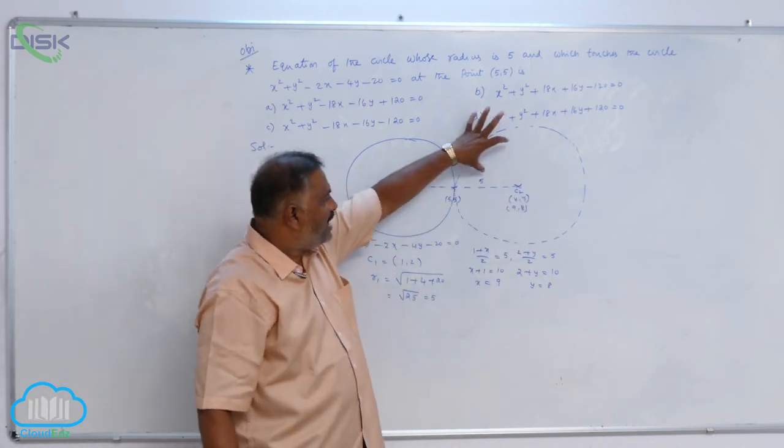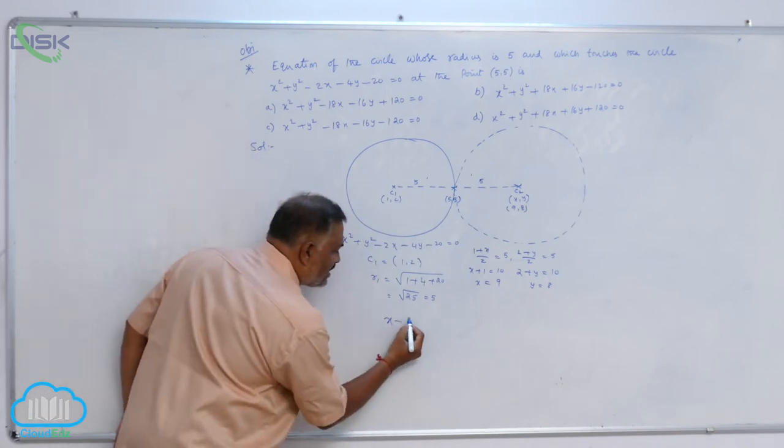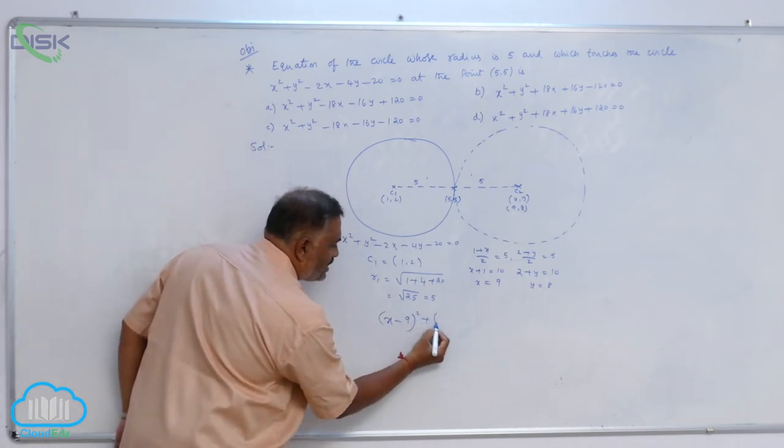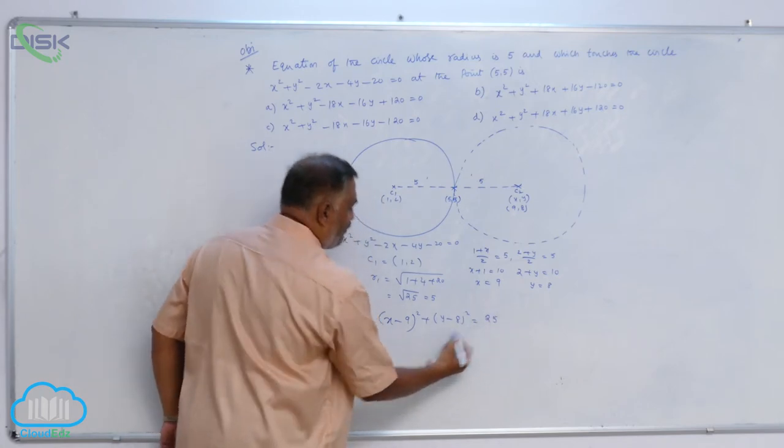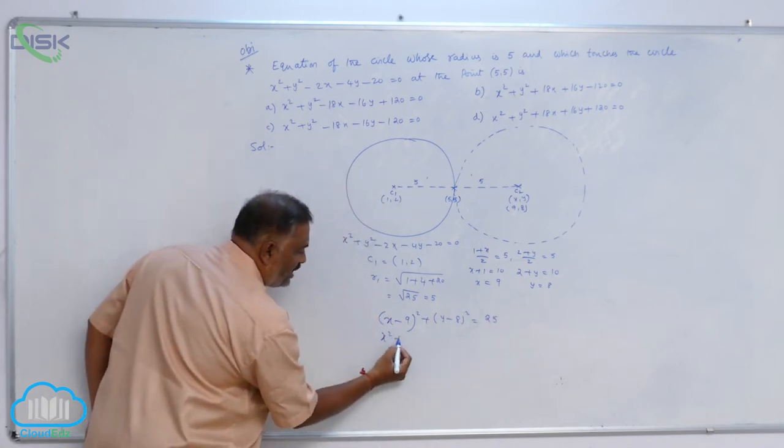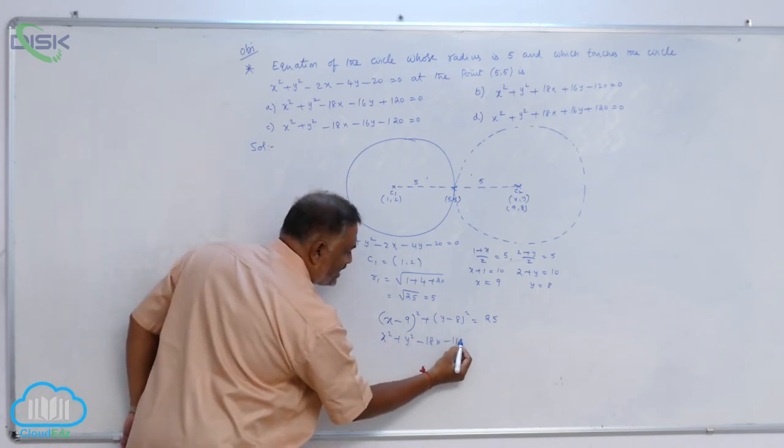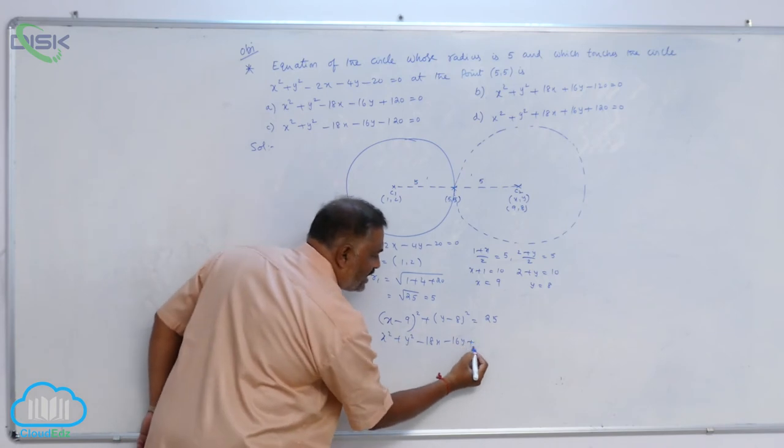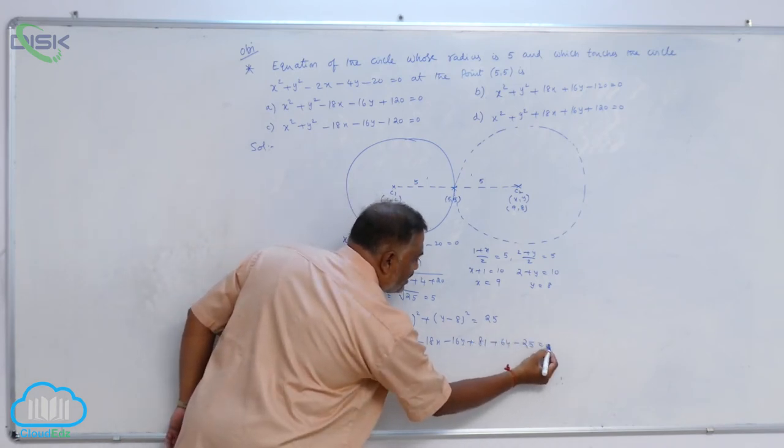Once you know the center and the radius, you can write down the circle equation. (x - 9)² + (y - 8)² is equal to 25. So x² + y² - 18x - 16y, plus 81 + 64 - 25 is equal to 0.